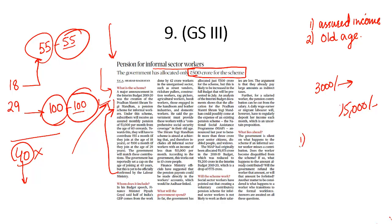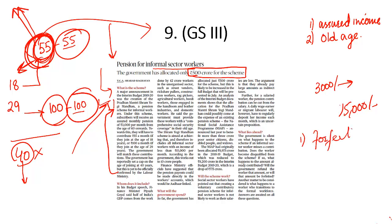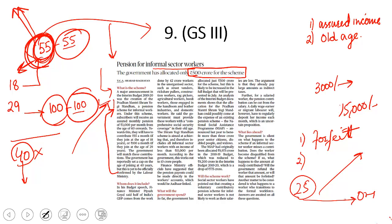A key unanswered question about the scheme: what if a worker from the unorganized sector misses a monthly contribution? Will he or she be out of the scheme? And if yes, will all the contributions made so far be refunded, or will the worker forfeit those contributions? These questions need to be suitably answered. That is what this newspaper article is about.